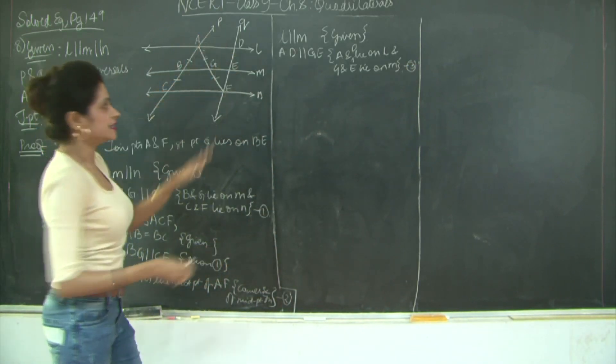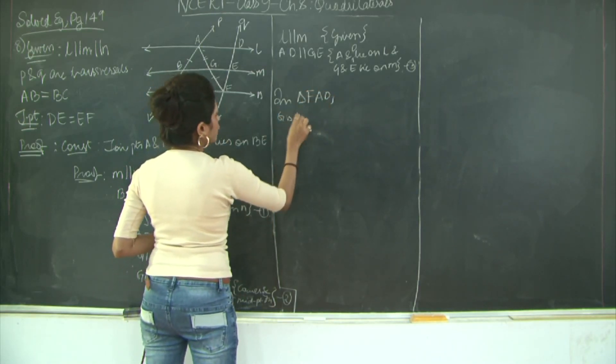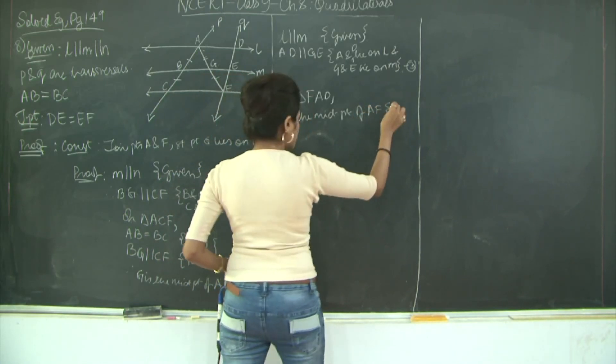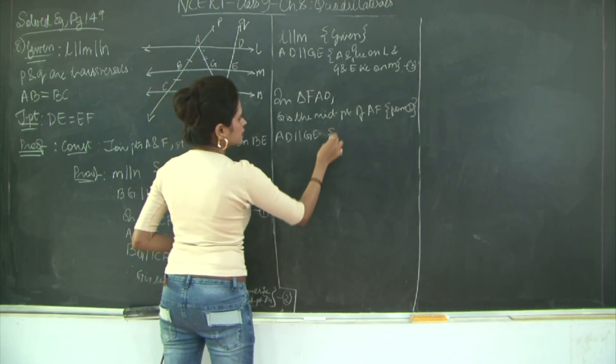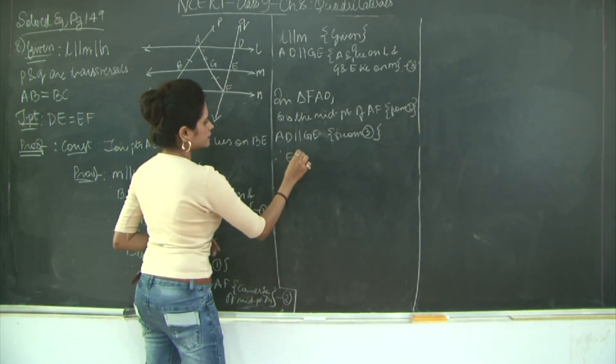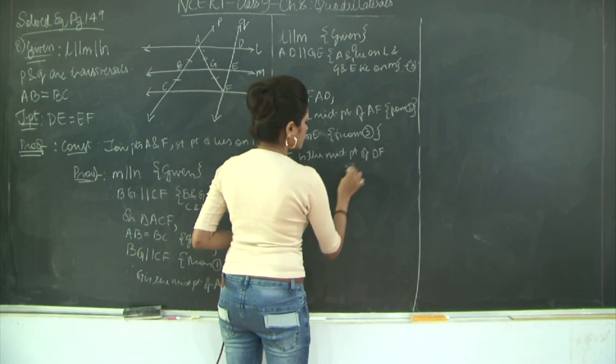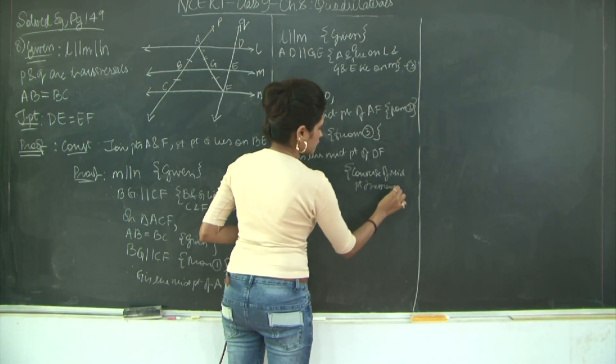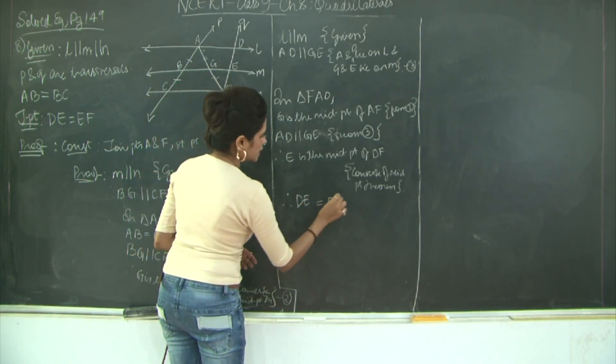So now in triangle FAD, I have G is the midpoint of AF from 2. Also AD is parallel to GE. This is from 3. Therefore, E is the midpoint of DF. Why? Converse of midpoint theorem. What does this imply? Therefore DE is equal to EF. Hence proved.